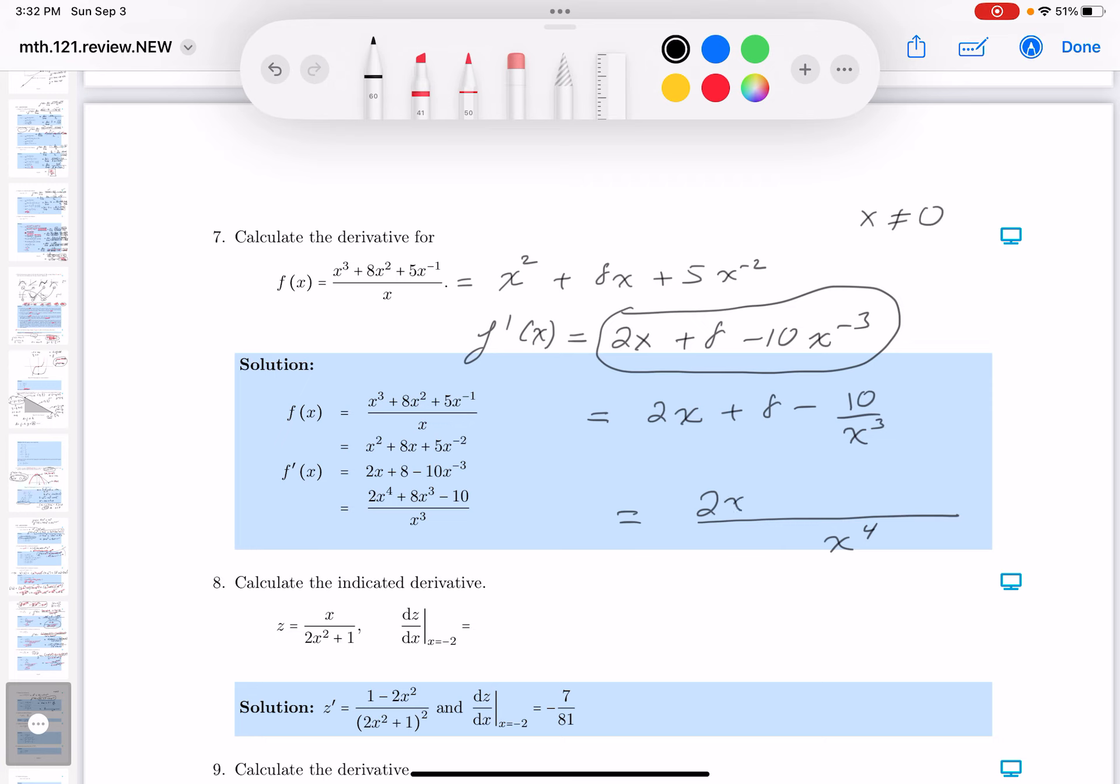What do you get there? Here, 2x to the 4 plus 8x cubed minus 10. This is also a simple form of it.